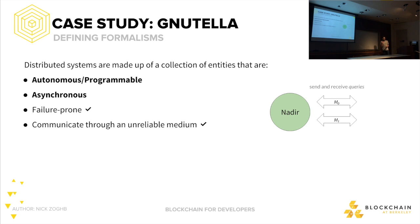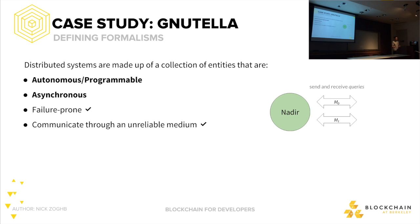We've discussed why being failure-prone and communicating through an unreliable medium need to lead us to make smart network choices. But we haven't really talked about autonomy or asynchrony. Nadir can send and receive messages — one and zero — and that is basically autonomy. He can set up a script running on a certain port that manages outgoing and incoming packets.